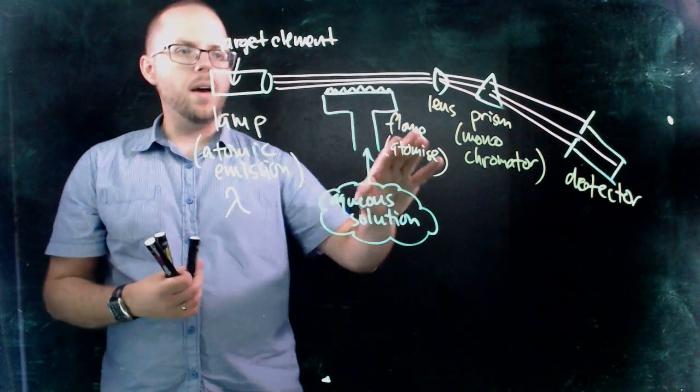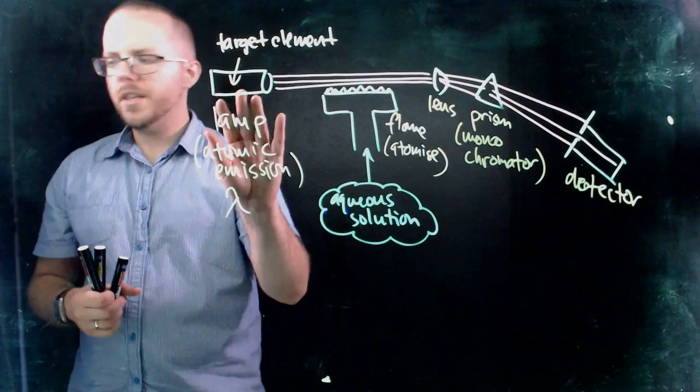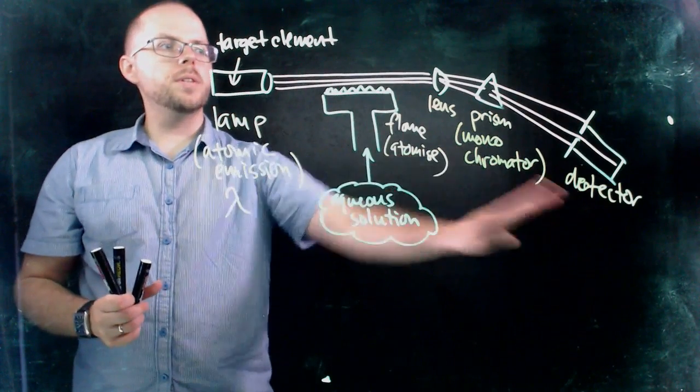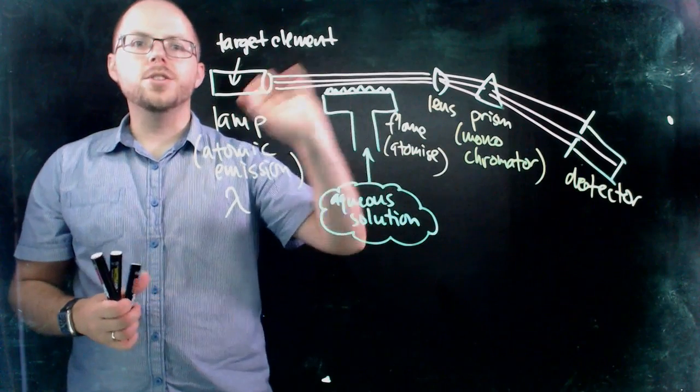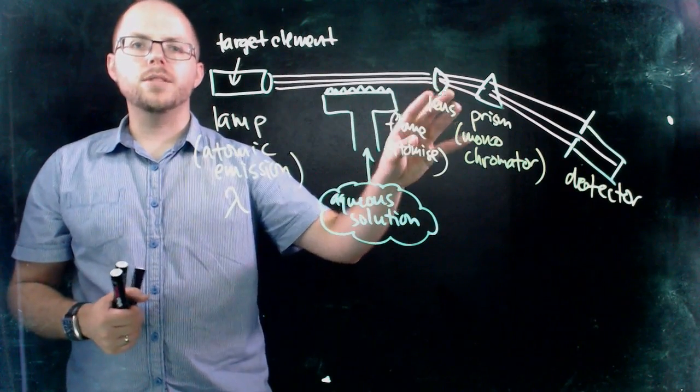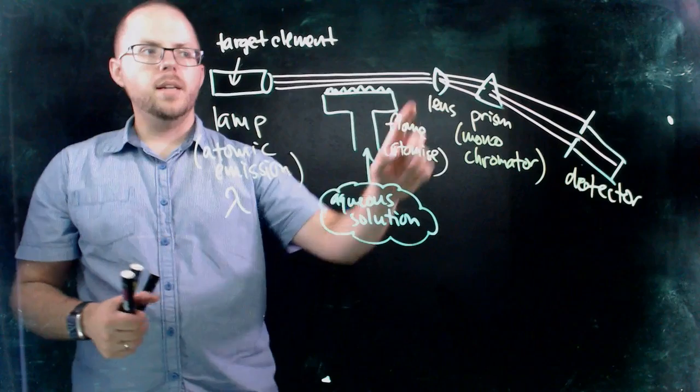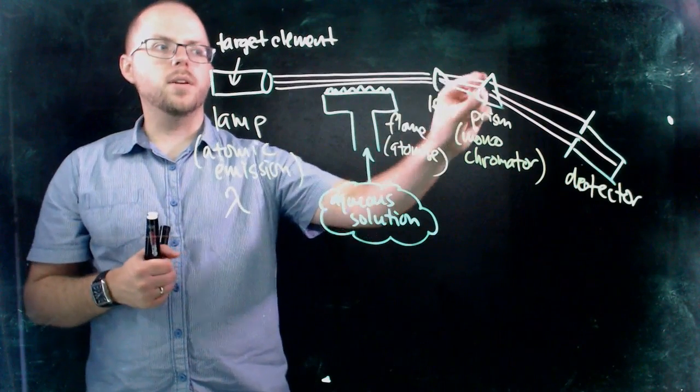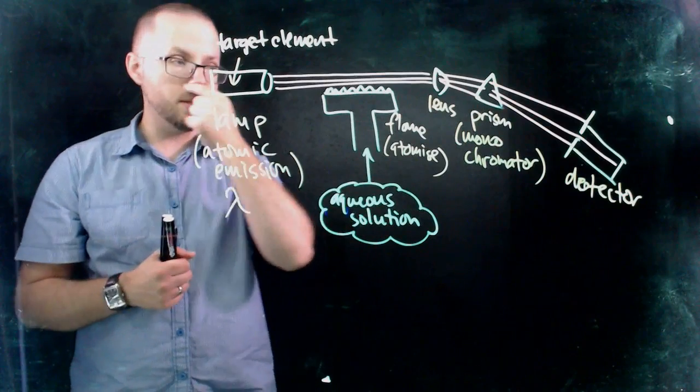So what we have is that we're producing the wavelengths that we need, we're passing them into the sample, and then all of this business over on the other end of it is to collect the wavelengths that pass through and detect them. We have a lens to be able to focus the light and pass it along to the prism, which is our monochromator.